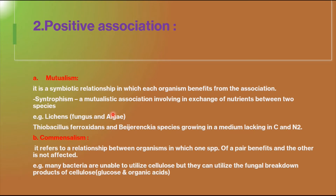Positive association is of two types: mutualism and commensalism. Mutualism is a type of symbiotic relationship in which each organism benefits from the association — both organisms are getting benefited. A mutualistic association involving the exchange of nutrients between two species is called syntropism.